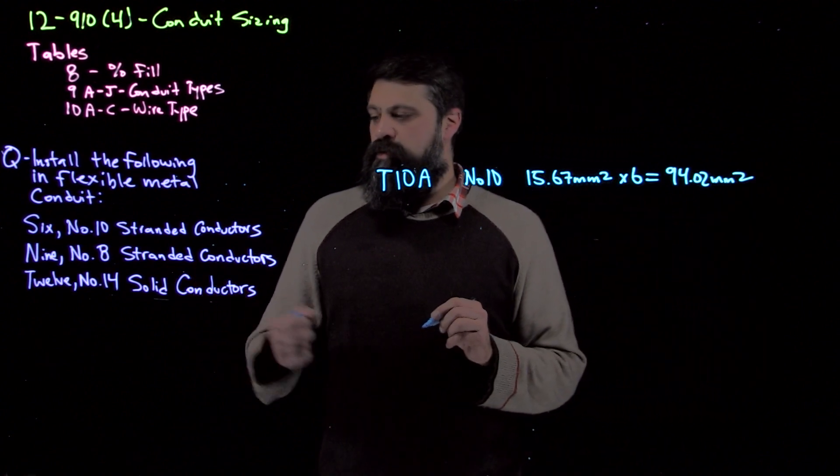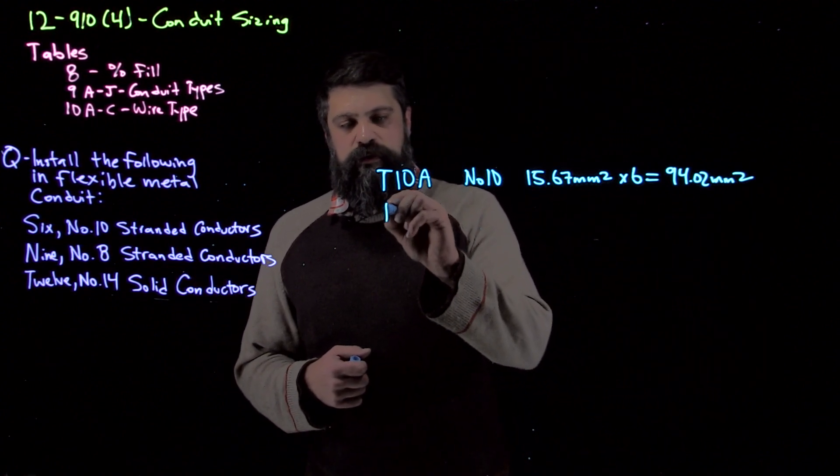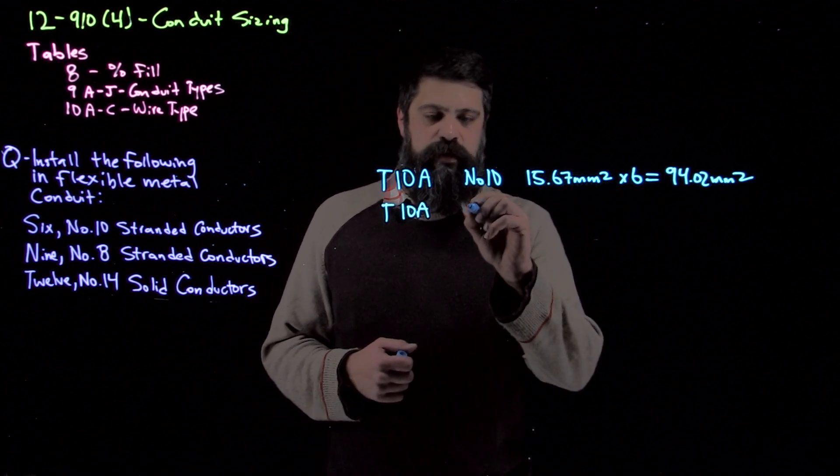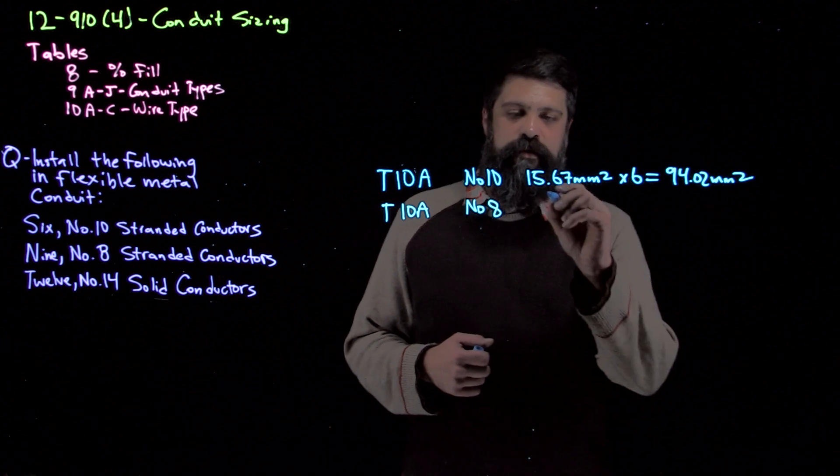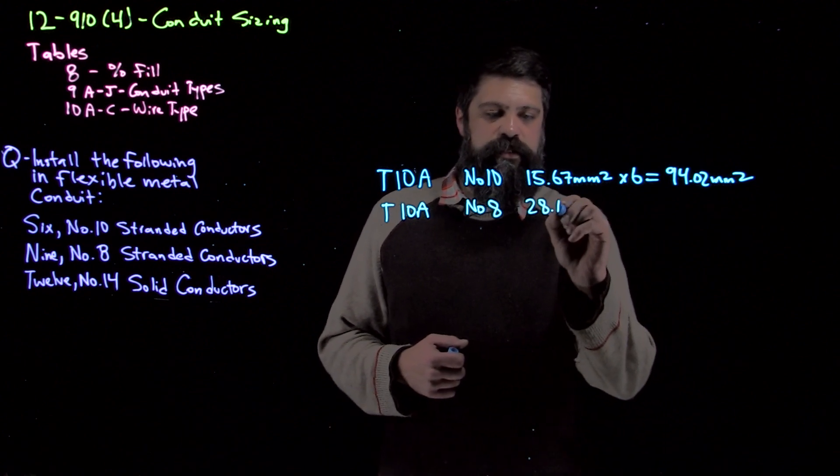Okay, the second one that we're going to do is number 8 stranded. So again, we're still going back over to table 10A. And now we'll look at number 8. Number 8, a single conductor, is 28.17 mm².